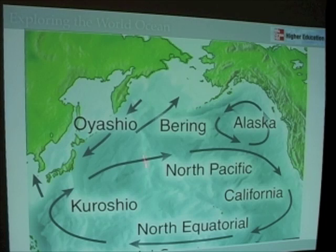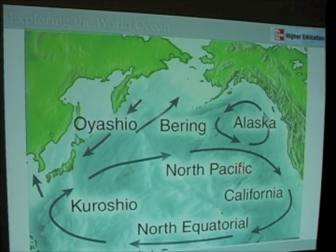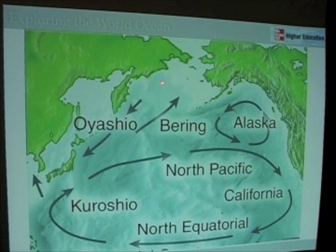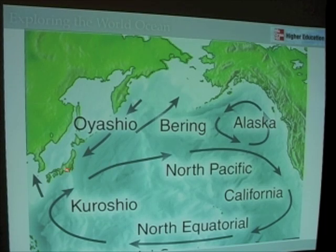The Kuroshio current is a western boundary current — 'Kuroshio' actually means 'black current,' and you'd have to ask the Japanese why it's called that. This completes the North Pacific Subtropical Gyre: North Pacific, California, North Equatorial, Kuroshio. In the subpolar Pacific gyre, we have the Oyashio current running south from Russia to Japan and interacting with the Kuroshio — a region of intense physical ocean activity — plus the Bering Sea current running through the Bering Sea.